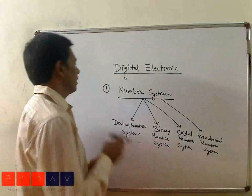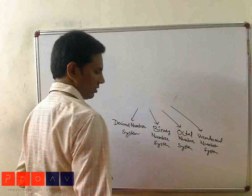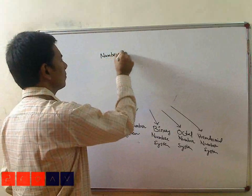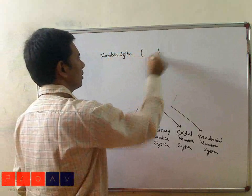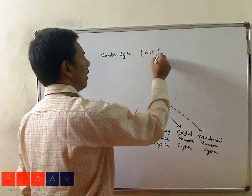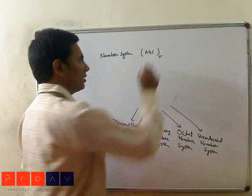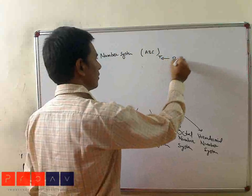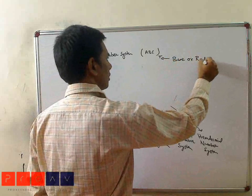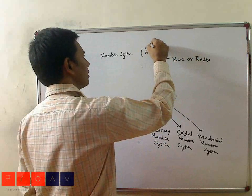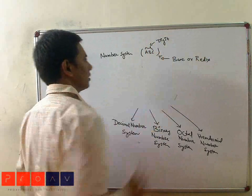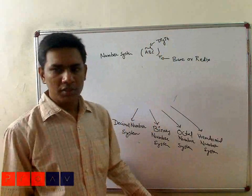The basic representation of a number system uses some digits A, B, C, and R, where R is for the base, or radix. These are the rounded digits. This is the basic representation of a number system.